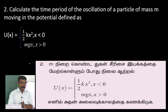One fantastic, exciting problem: calculate the time period of the oscillation of a particle of mass m moving in the potential defined as U(x) = (1/2)kx² when x is less than 0, and U(x) = mgx when x is greater than 0.